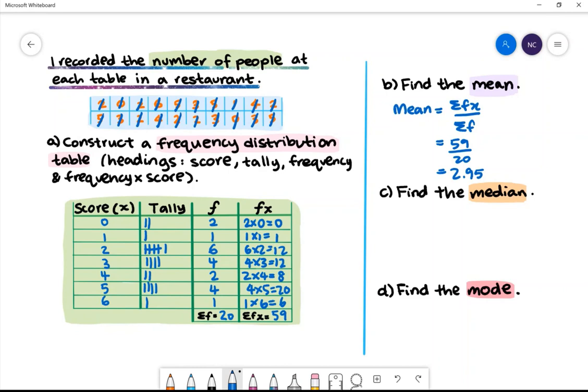Part C: Find the median. The median is the middle number once we have put the numbers in ascending order. We have 20 numbers all together. The median will be between the 10th and 11th number. The 10th score is 3 and the 11th score is 3. The average of 3 and 3 will give us the median. Therefore, the median is 3.